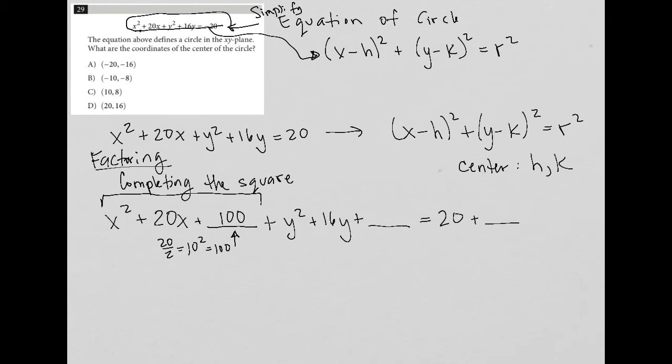Do the same thing on this side with the y's. Again, 16 divided by 2, so half the middle term, which is equal to 8. And then square that number, which is equal to 64. And that goes here.